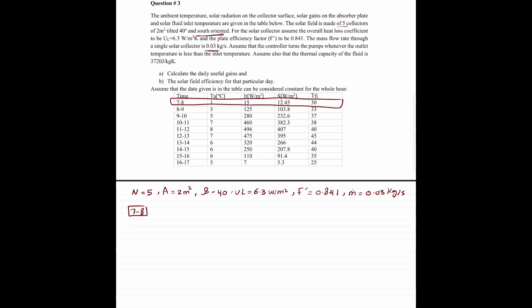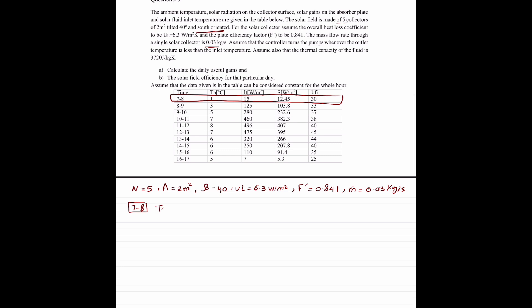We have a T ambient of 1 Celsius. We have an IT solar radiation of 15 watts per meter squared. We have S of 12.45 watts per meter squared, and we have a TFI of 30 Celsius.